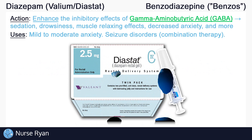Diazepam is available rectally as a gel for treatment of certain acute refractory seizures. Diazepam rectal gel has an onset of approximately 2 to 10 minutes, which is much faster than oral diazepam, which has an onset of about 30 to 60 minutes. For additional information on diazepam rectal gel, like how to use it, dosing, and more, I've placed a link in the video description that covers it very thoroughly.